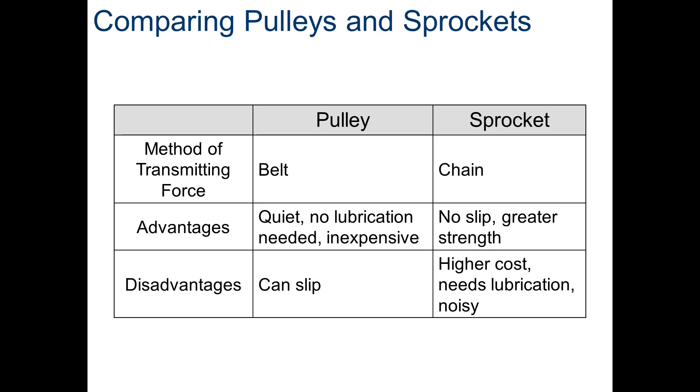Chain and sprockets, you have no slip. You got a lot greater strength. But, you do have a higher cost. You need lubrication. And chains and sprockets tend to be much noisier.